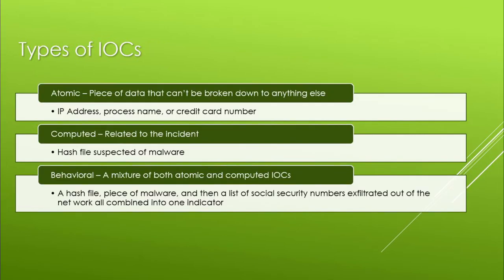There are three types of indicators of compromise: atomic, computed, and behavioral. An atomic IOC is a piece of data that can't be broken down into anything else — this might be an IP address, email address, a process name, or a piece of information like a name on a credit card. A computed IOC is a piece of information related to the incident, like a hash file or suspected malware. Finally, a behavioral IOC is a mixture of atomic and computed — for example, a hash file or a piece of malware combined with a list of social security numbers that were exfiltrated out of the network.